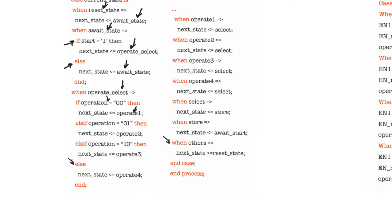'When others' indicates the state machine is doing something wrong. Since we have already covered all possible defined states in the other when clauses, 'when others' means the state register is carrying a non-binary value such as Z, X, or U — one of the non-standard logic values. In this situation, the safest thing to do is transition to the reset state, because the machine is in an undefined condition and needs to be restarted.